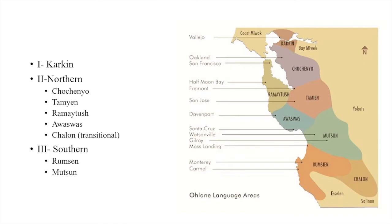The three most documented languages are probably Chochenyo, Mutsun, and Rumsen, because J.P.H. worked with the last native speakers and documented extensive notes. The next most documented are probably Awaswas and Chalon — Pinart and Henshaw in the 1800s also gathered some word lists. Tamien, Ramaytush, and Karkin are the least documented; there are maybe at most 200 words known for Tamien, around 100 for Ramaytush, and maybe 50 for Karkin.